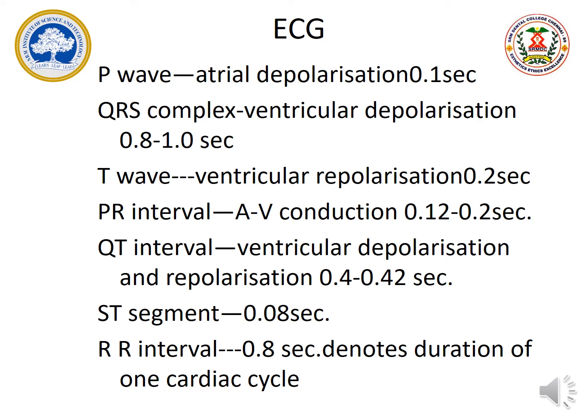Next is the QT interval, which occurs during ventricular depolarization. The QRS complex occurs with the help of ventricular depolarization. The QT interval goes from the Q wave to the T wave, as the QRS complex is merged with ventricular depolarization and the T wave is ventricular repolarization. The combination of these two we call the QT interval, which is 0.42 seconds.